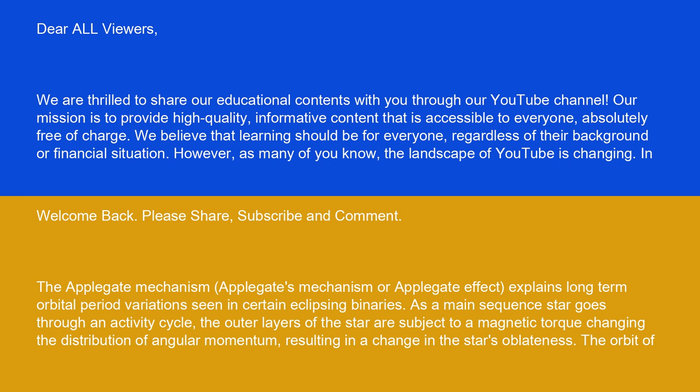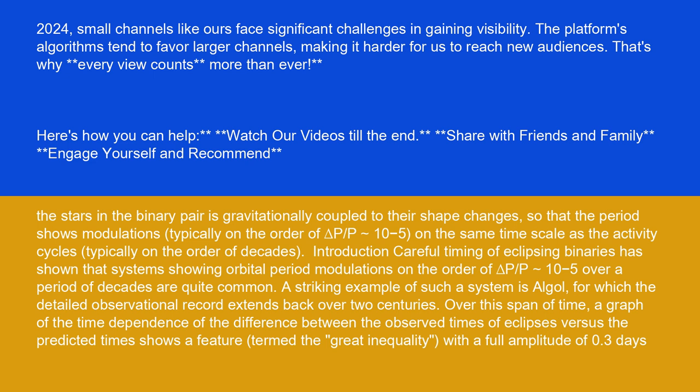The orbit of the stars in the binary pair is gravitationally coupled to their shape changes, so the period shows modulations, typically on the order of ΔP/P ~ 10^-5, on the same time scale as the activity cycles, typically on the order of decades.